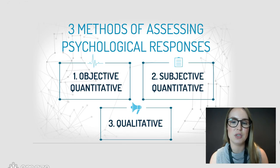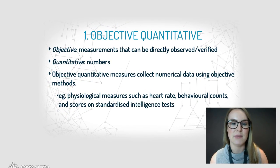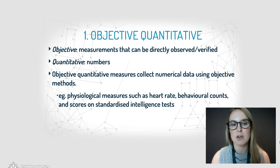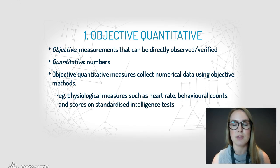The three methods are: one, objective quantitative; two, subjective quantitative; and three, qualitative. Objective quantitative — we know these definitions already, but just to give you a recap: objective measures can be directly observed and verified, and quantitative data is to do with numbers. Objective quantitative measures collect numerical data using objective methods.